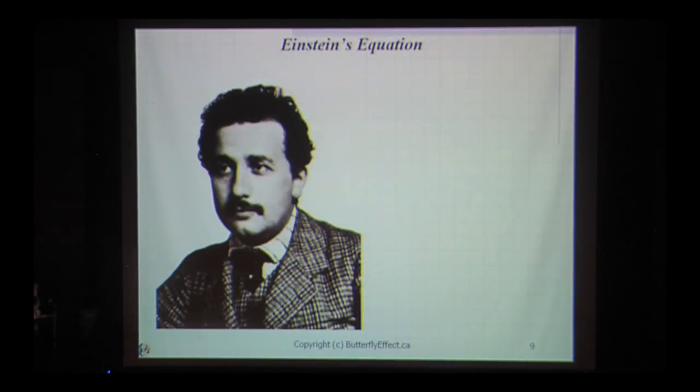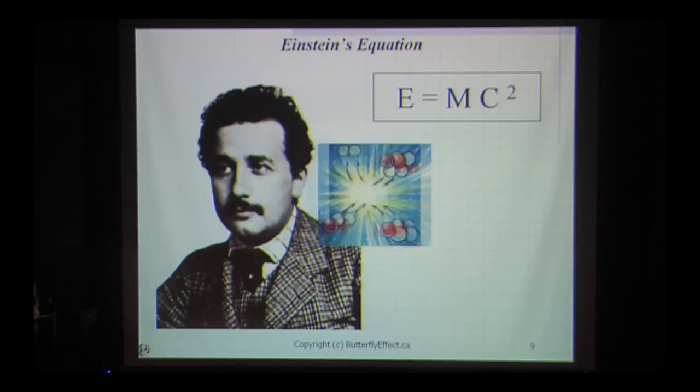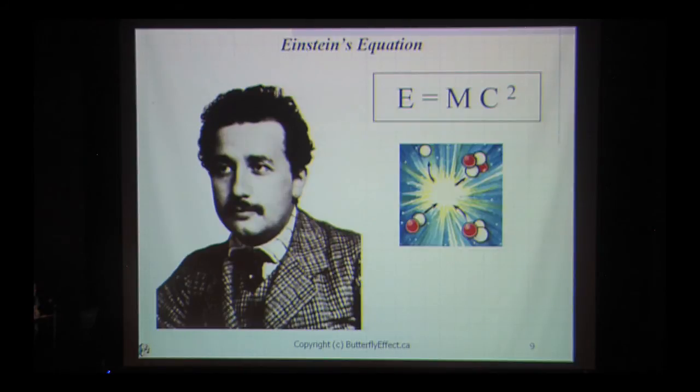So, let's start with one of the simplest equations that you can write down. Einstein's equation E equals mc squared. Now this equation is quite elegant and easy to understand. In English, it means that energy equals mass times the speed of light squared. It shows that mass can be converted into energy, lots of energy, and that large amounts of energy can generate mass or matter. Simple, right?